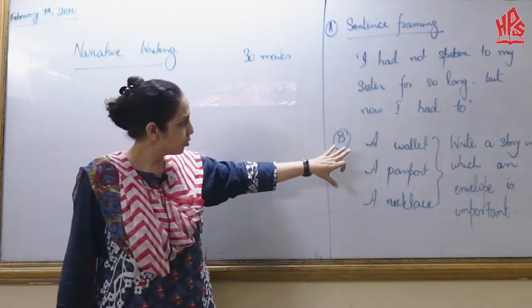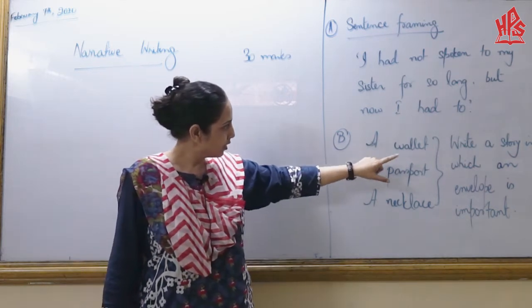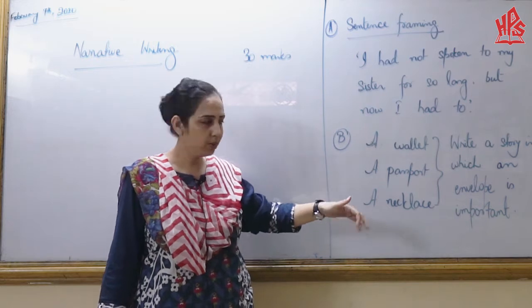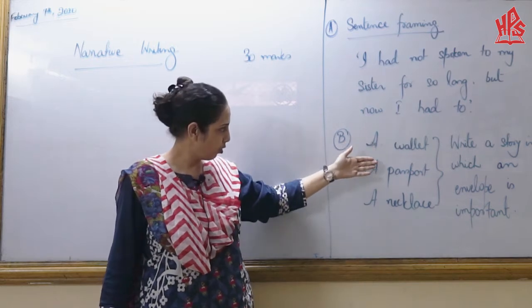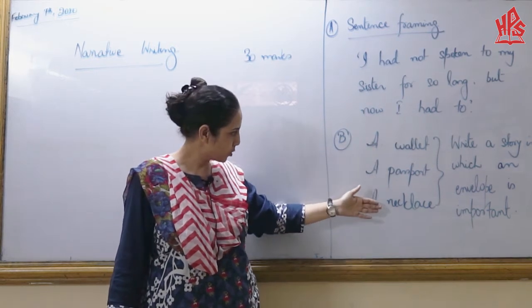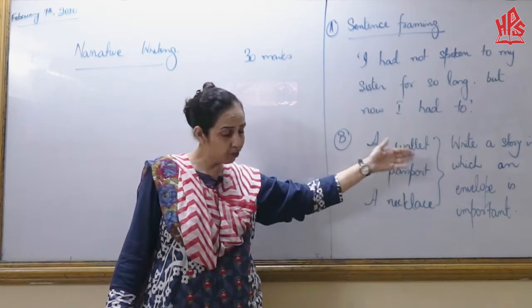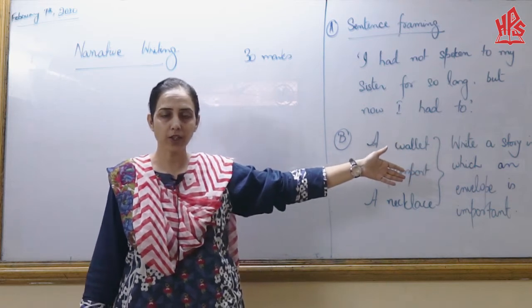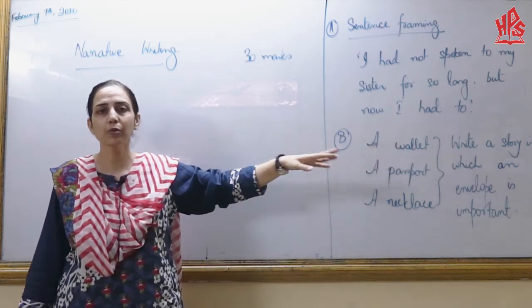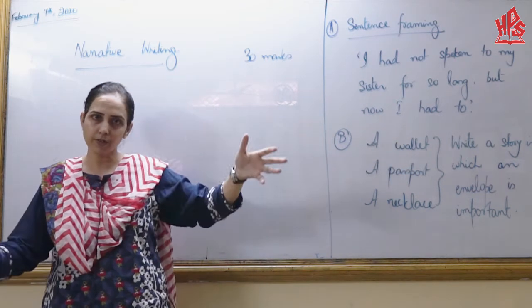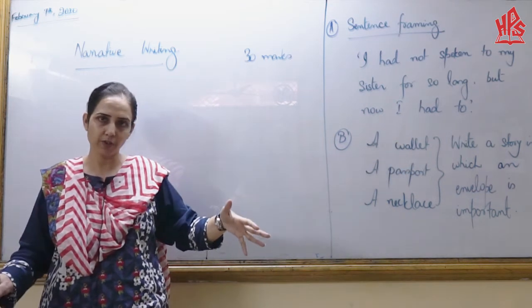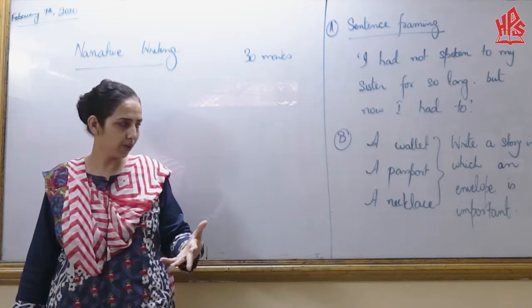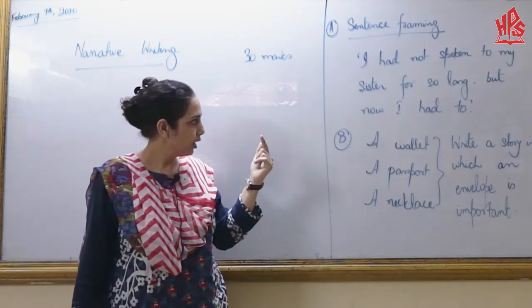Likewise, you might be asked to write a story in which an envelope is important — it can be a wallet, it can be a passport. These are further examples of that type. Obviously we are not putting all of these things together in one particular 400–500 word piece, whatever we are going to write about.